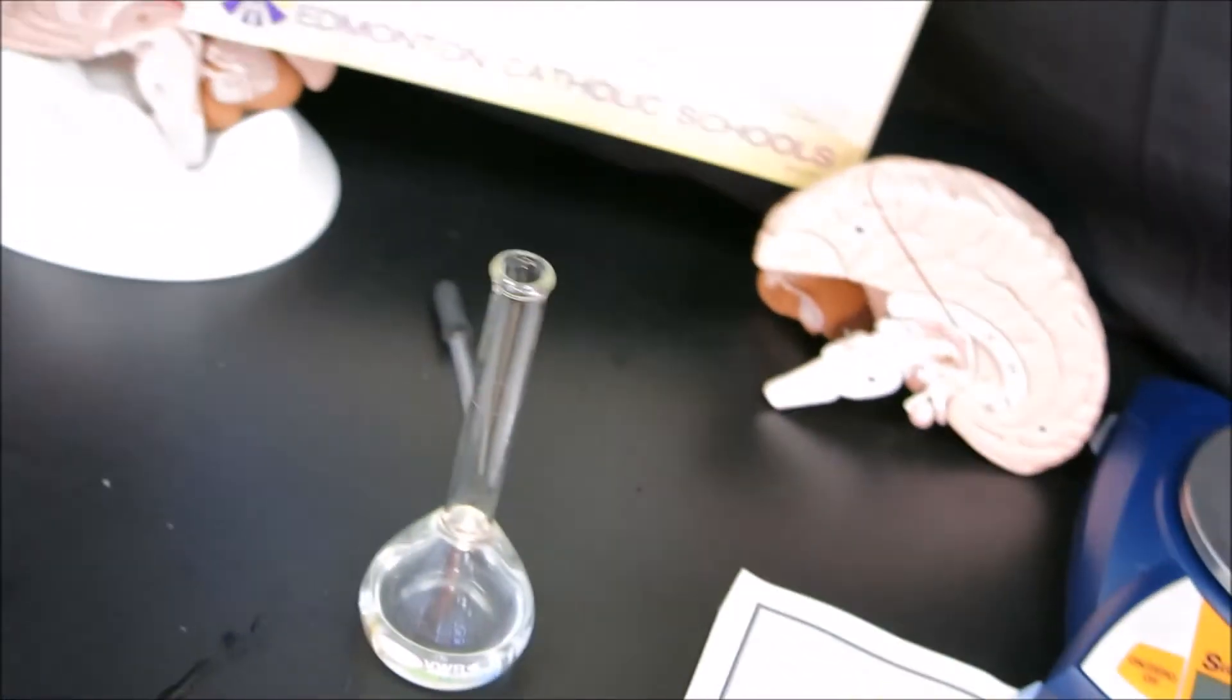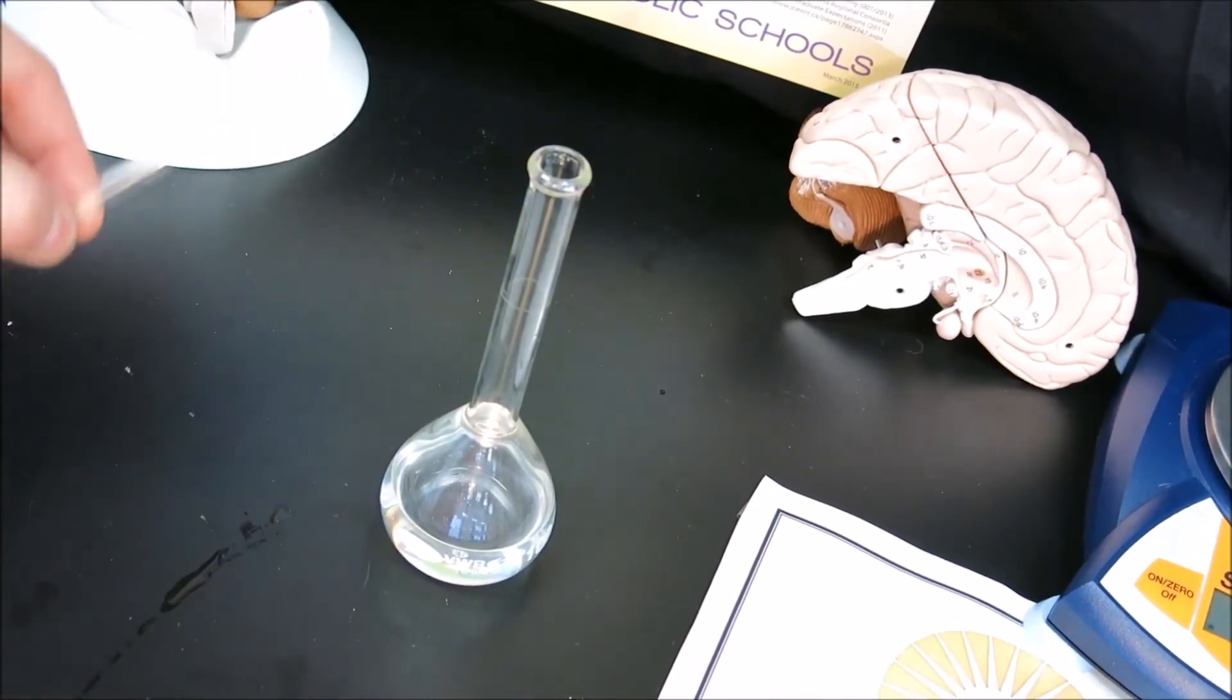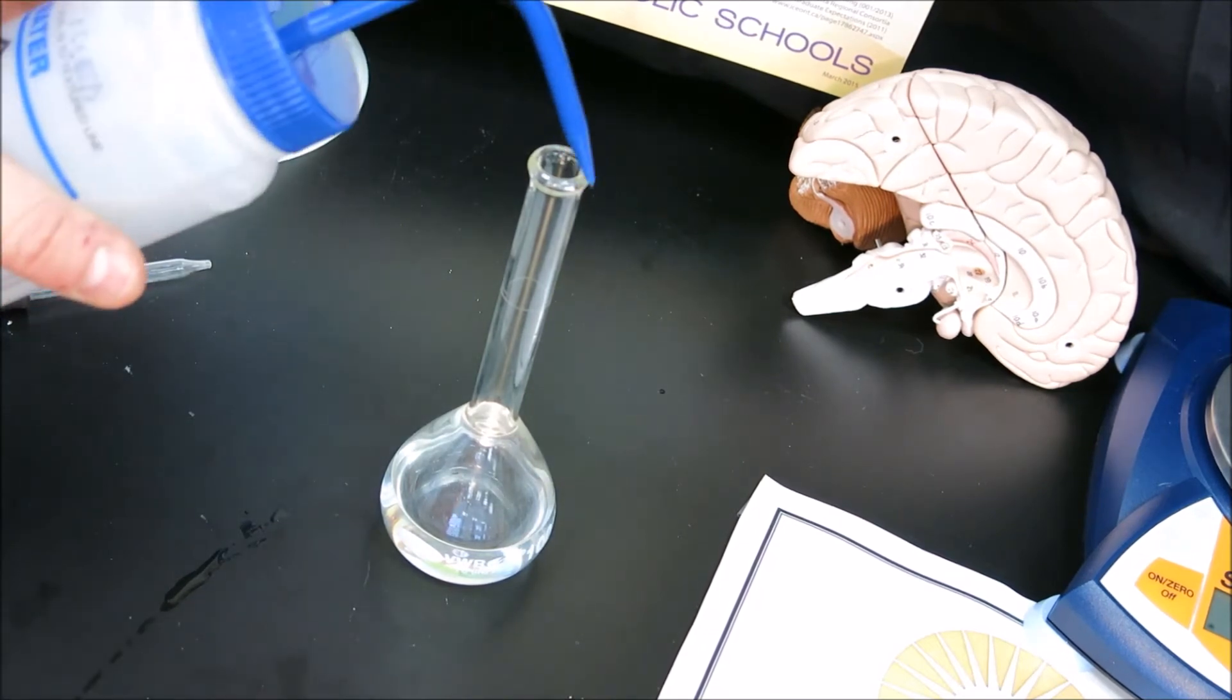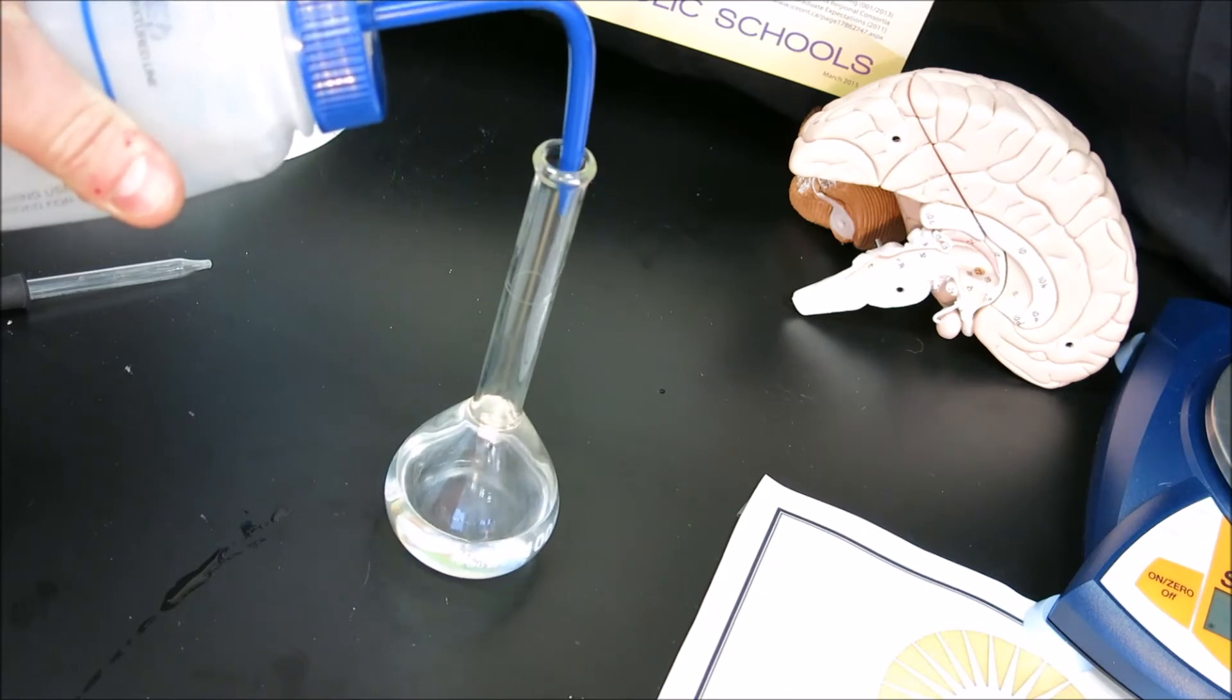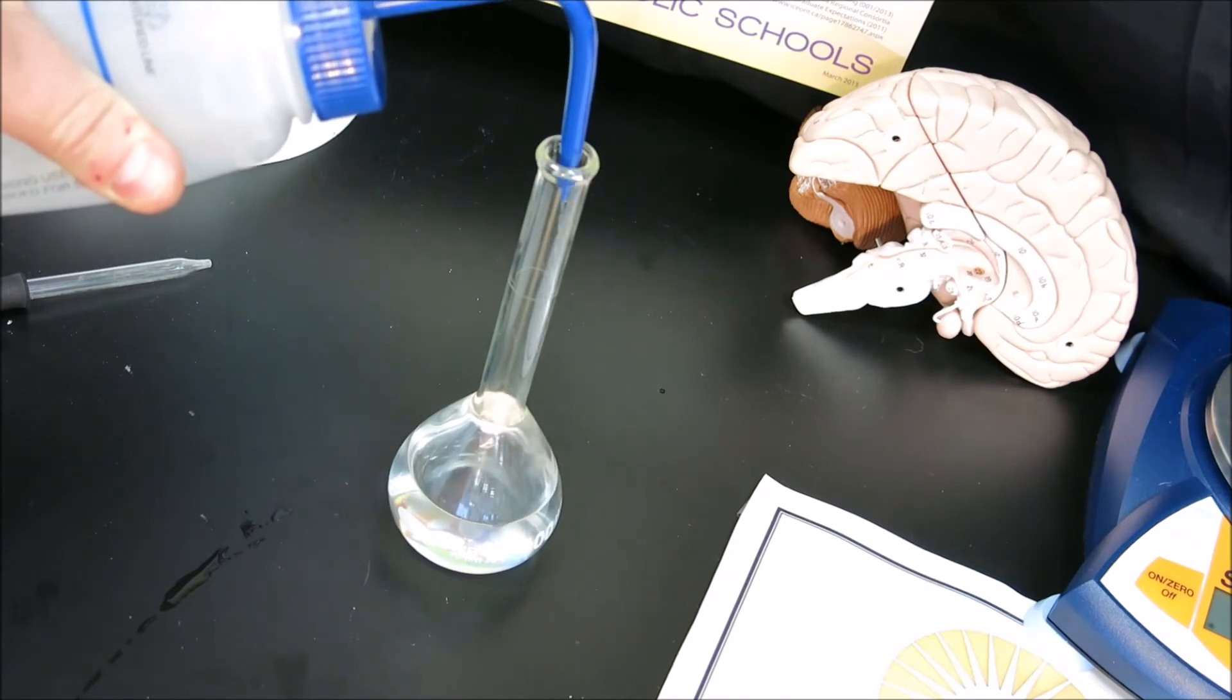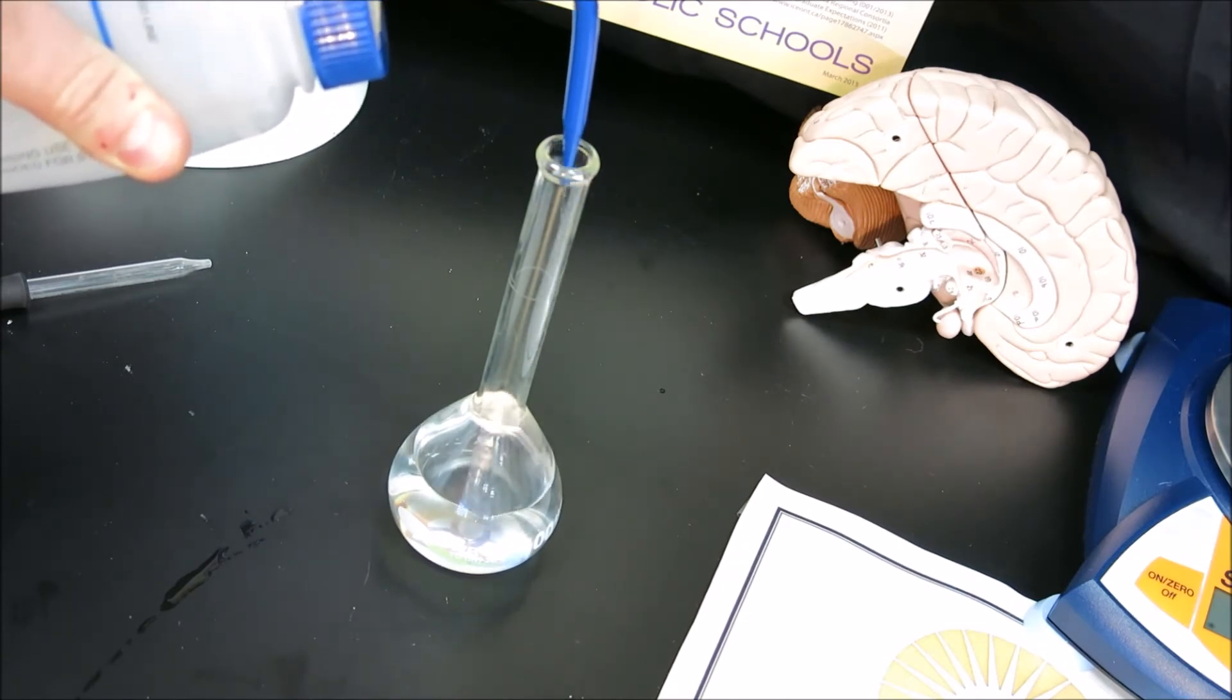To do that, we'll use a distilled water bottle, and at the last stage, an eyedropper if we need to get the meniscus to the line. One risk of filling is as soon as the liquid starts to enter the neck, which is very narrow, the level of fluid will rise very quickly compared to the level in the bottom part of the flask.